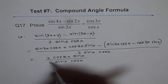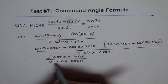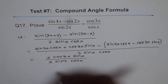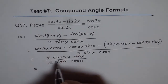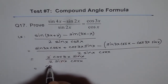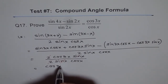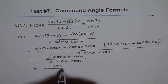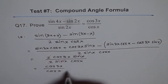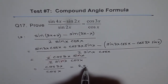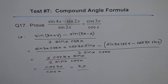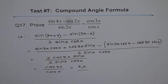From here we can cancel the 2s and sine x. That gives us cos 3x divided by cos x, which is the right side. So we have proved that the left side equals the right side, and therefore this identity is true.